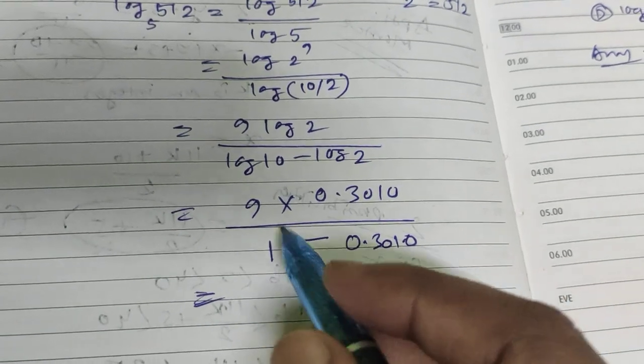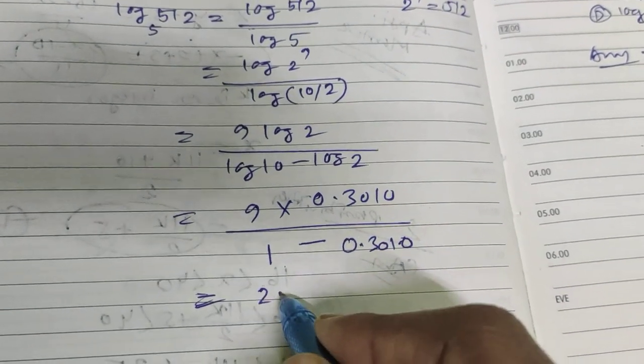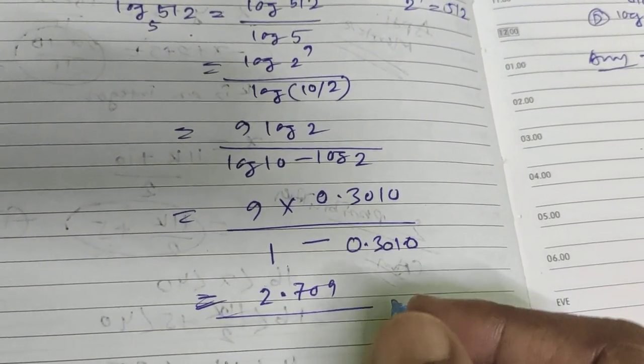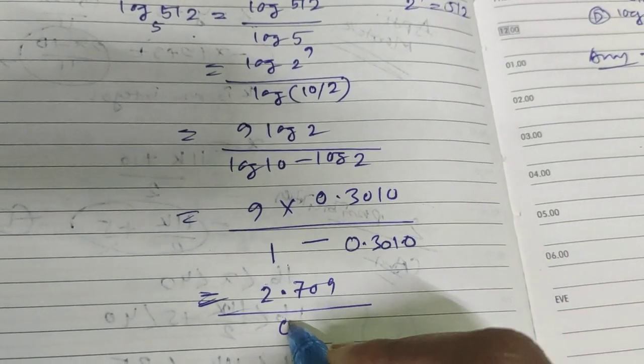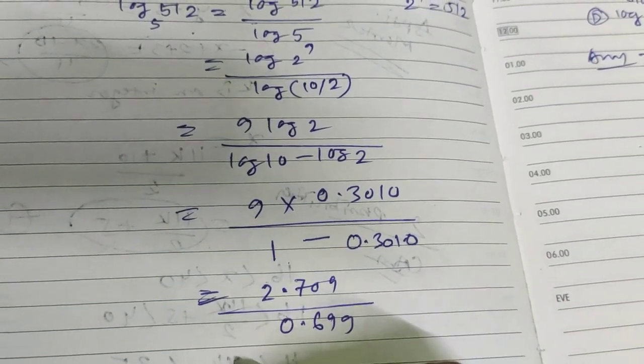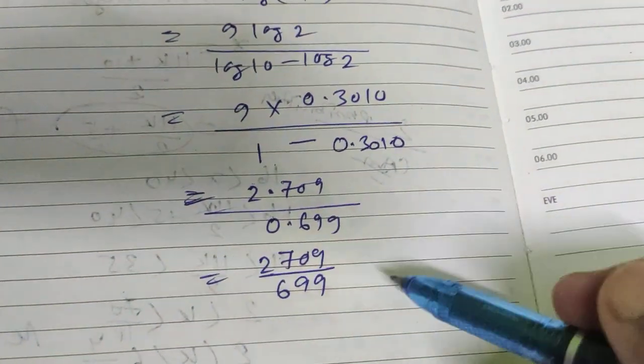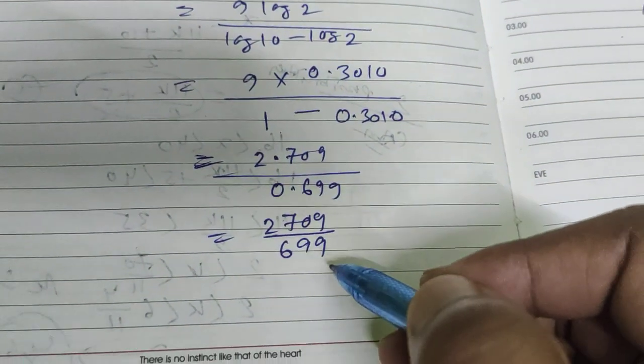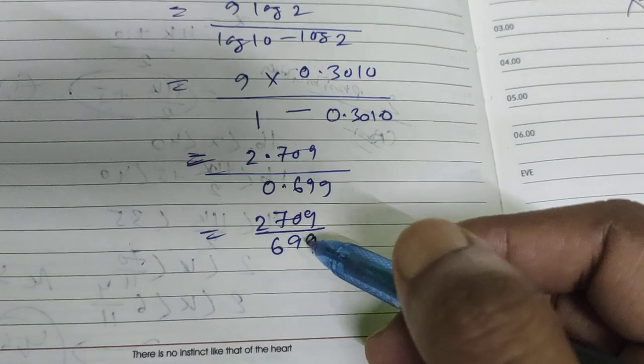Nine multiplied by 0.3010 is approximately 2.709, and 1 minus 0.3010 equals 0.699. So we have 2.709 divided by 0.699. Both are divisible by 3, and the result is approximately 3 point something.